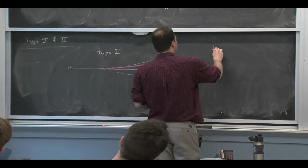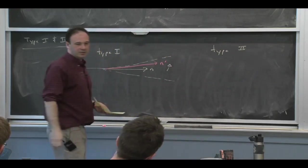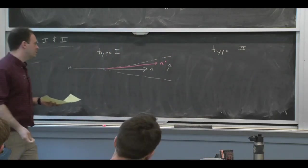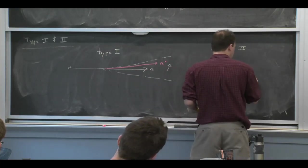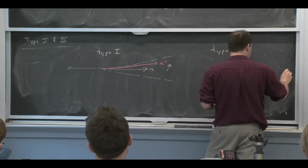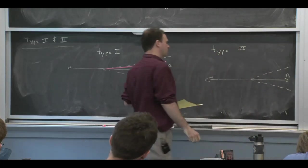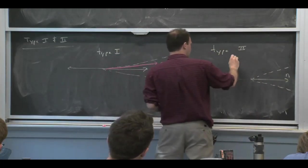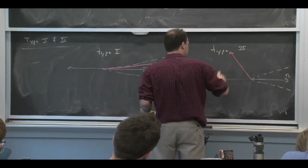Type two is related to the fact that this n bar vector was just an auxiliary vector that we used to decompose things. We didn't really care about it. It didn't have a strong physical motivation. It was just needed because we're using light cone coordinates. So I can make a very large transformation of that guy. So here's a large transformation.